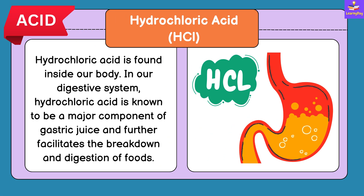Hydrochloric Acid: Hydrochloric acid is found inside our body. In our digestive system, hydrochloric acid is known to be the major component of gastric juice, which further facilitates the breakdown and digestion of foods we eat.